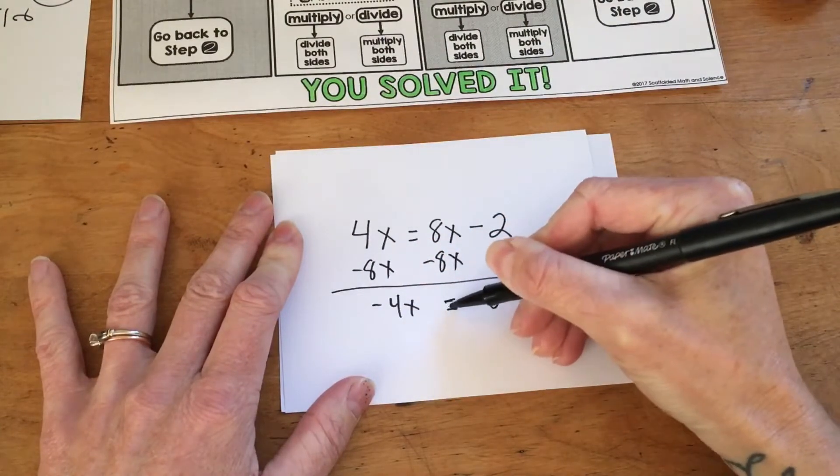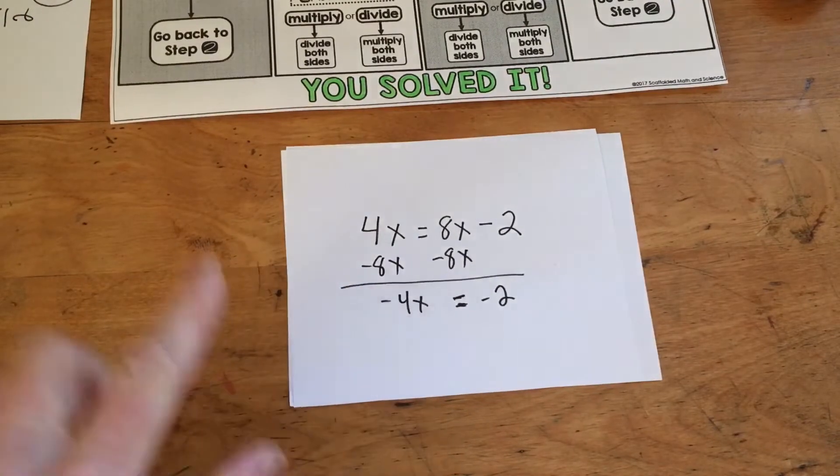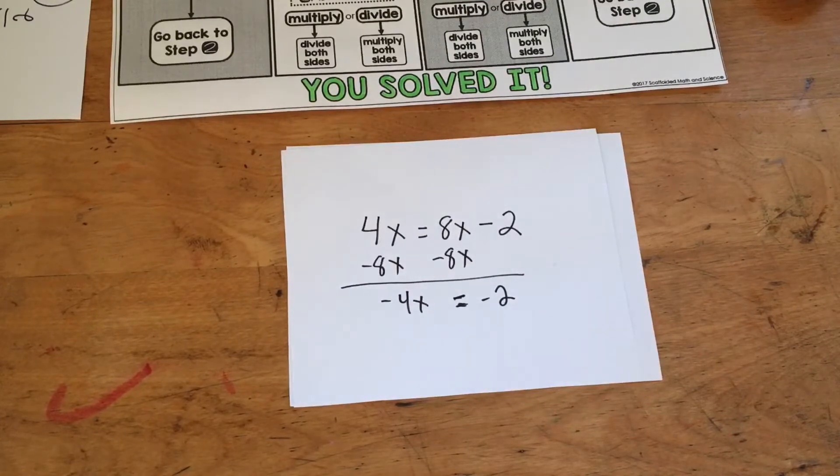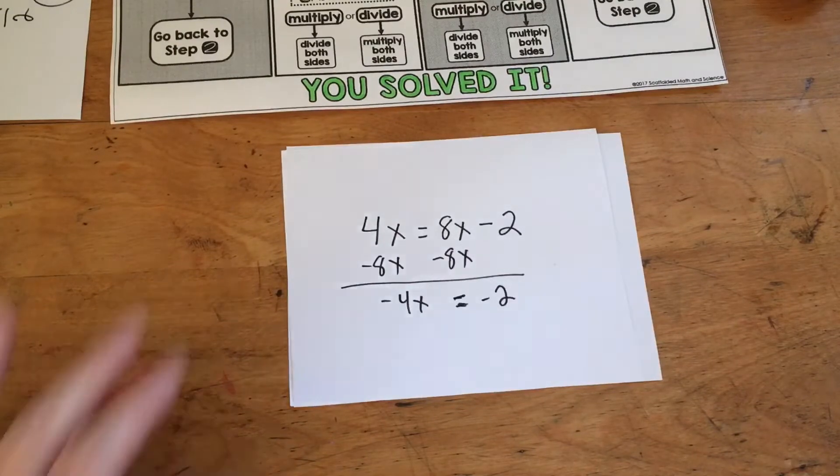And then ask them if there's any multiplication or division going on. They say, maybe with a little prompting, that that's a negative 4 times x. I ask them what the opposite or the inverse of multiplication is. They say division.